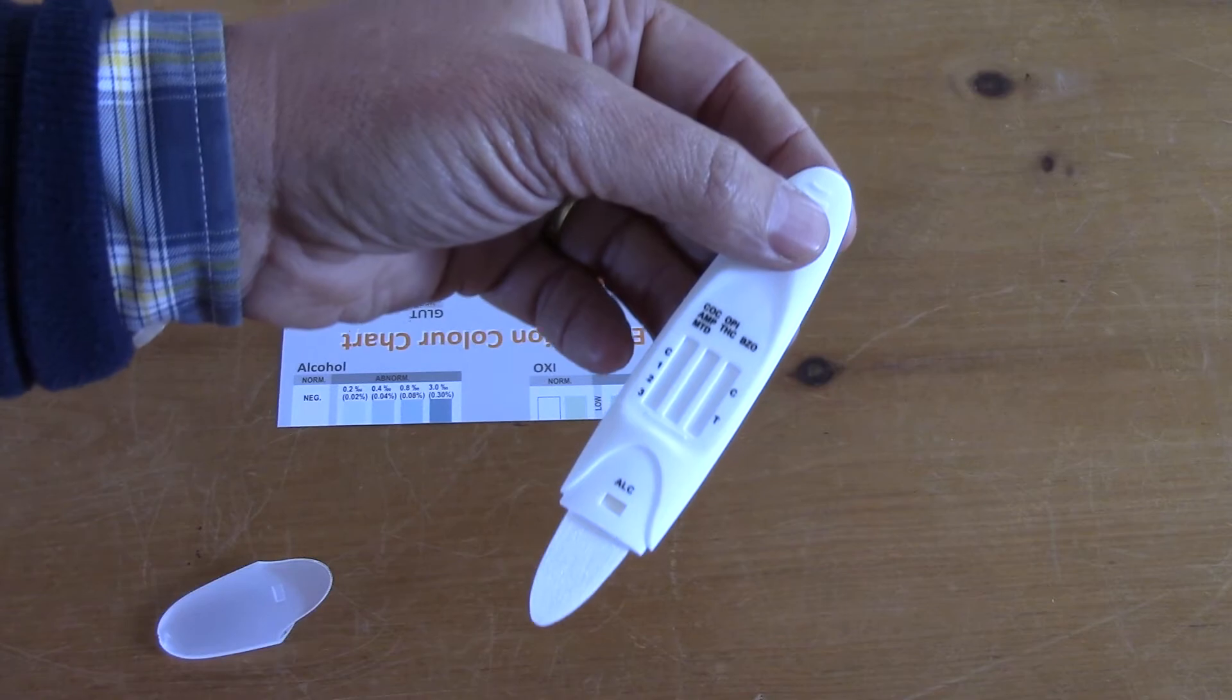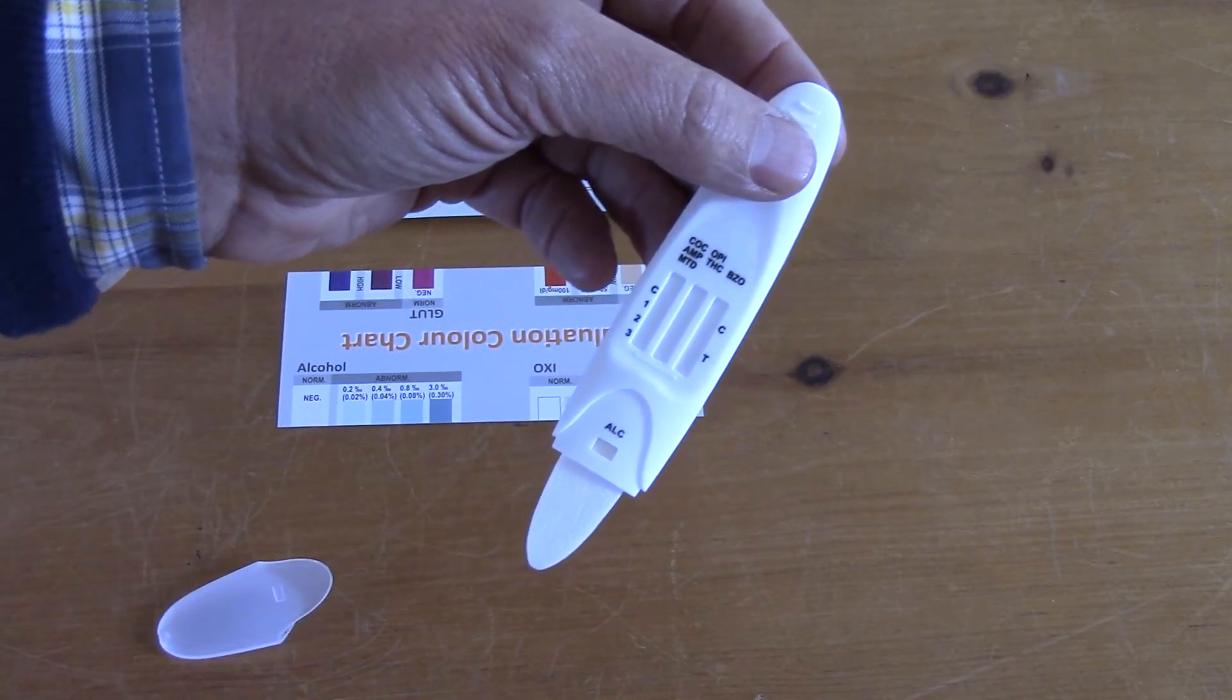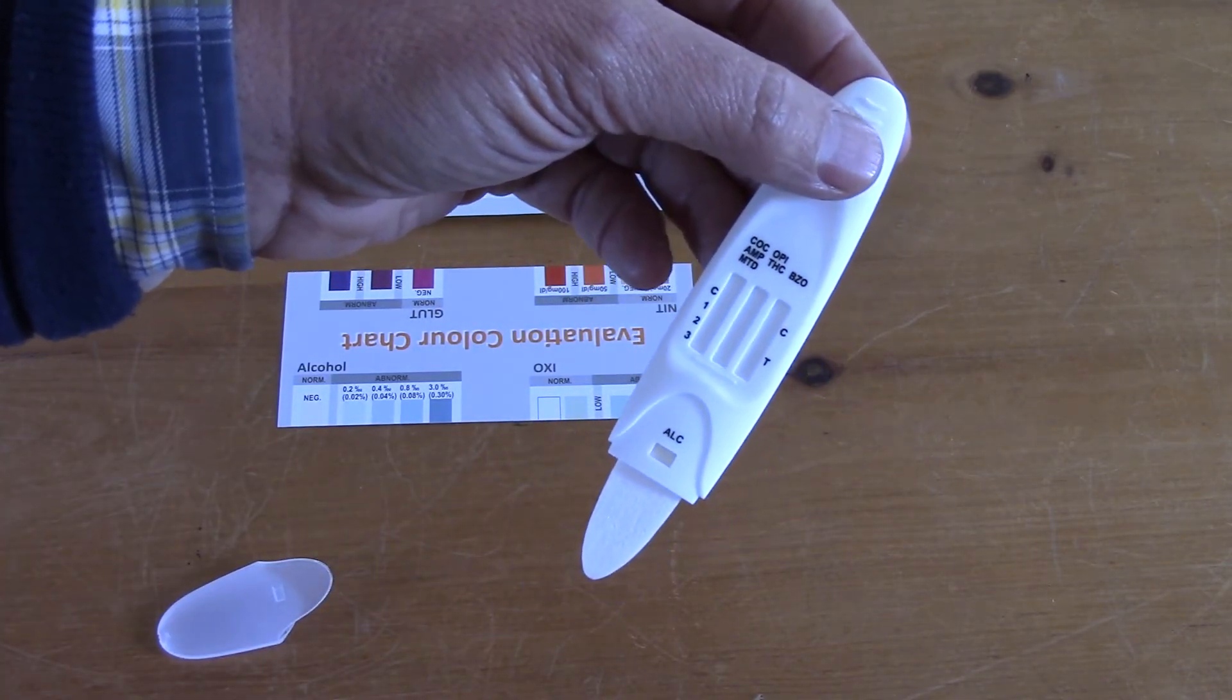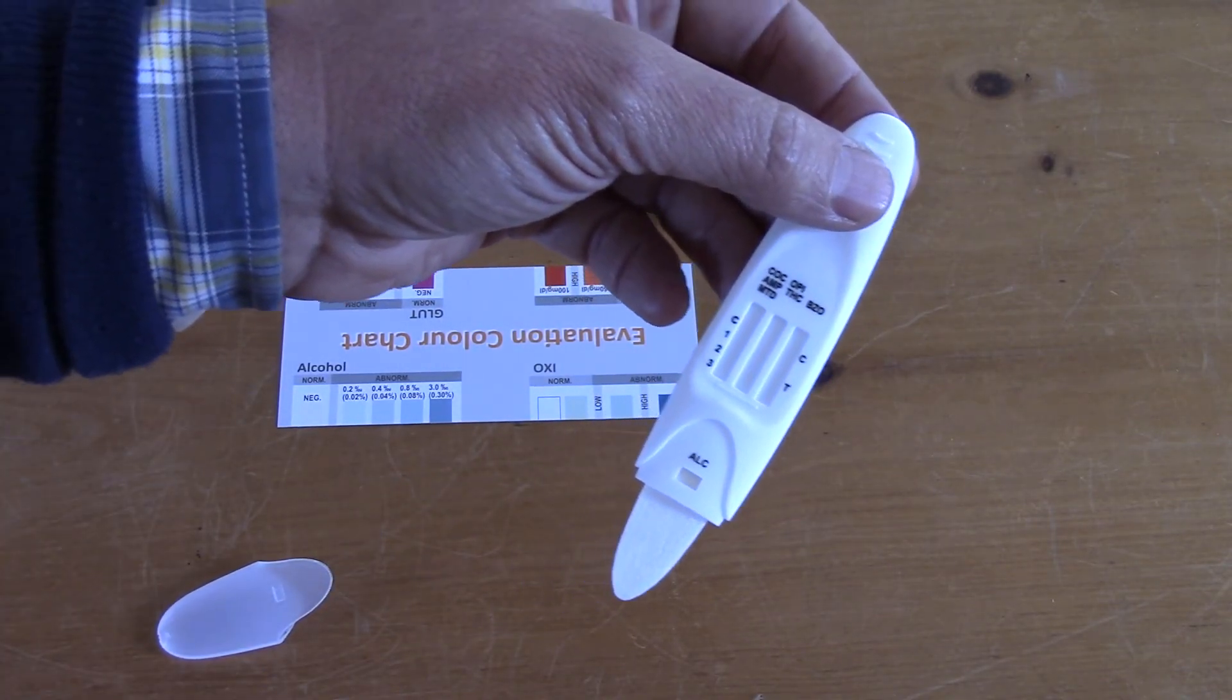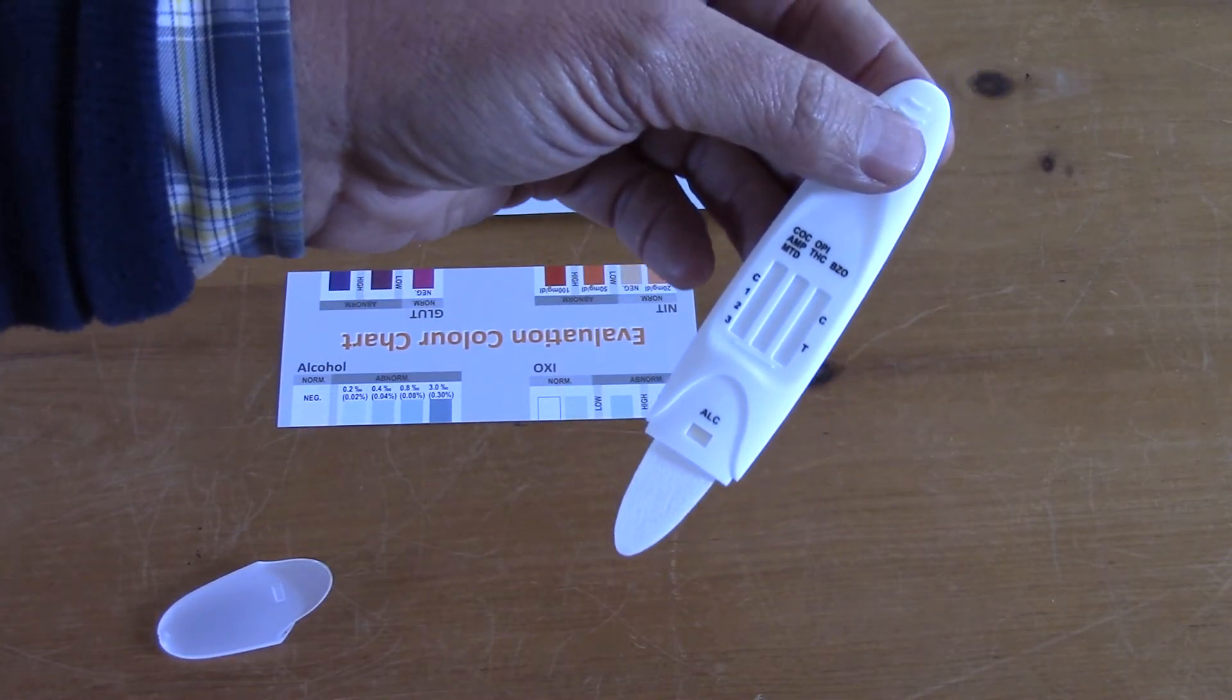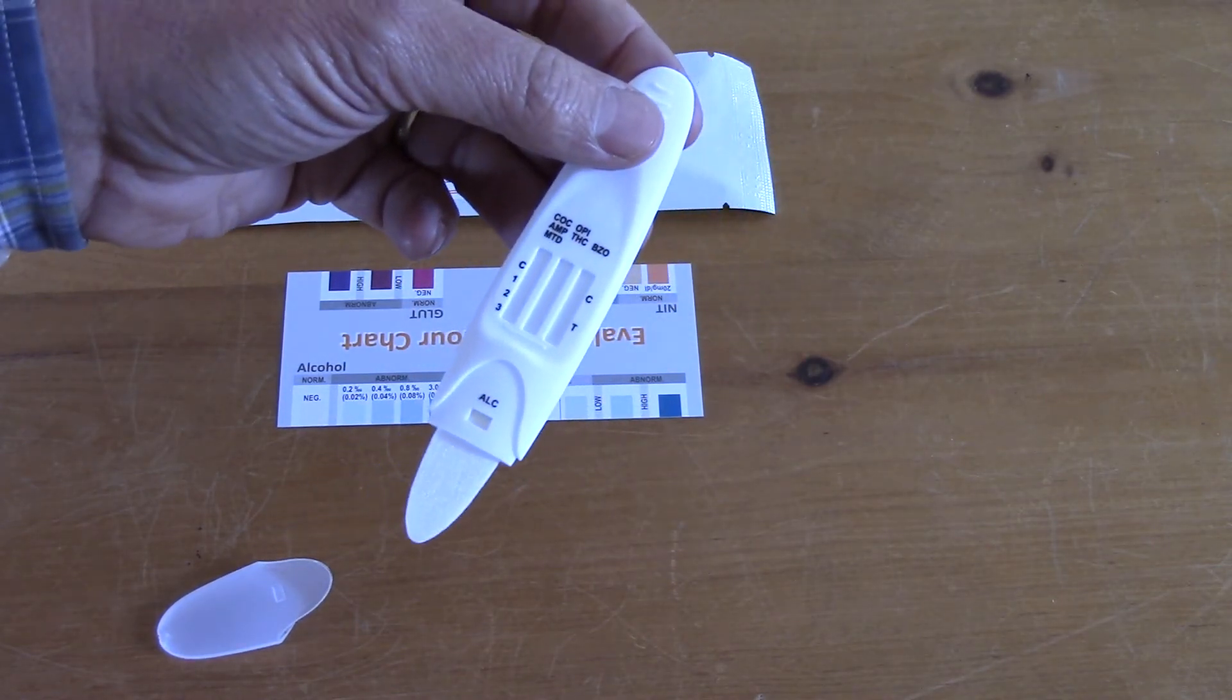But what you can actually do is see—and we'll show you this—the test lines developing and the pink dye running along the results windows towards those control lines. It can be left in the mouth until all the control lines have developed. At that stage you can take it out and resheathe it in the cover.